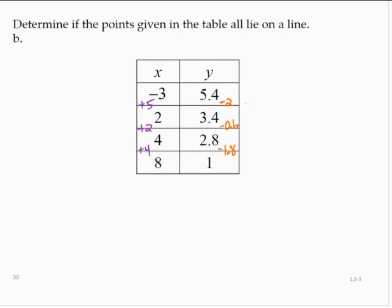Calculating the ratio, we would have negative 2 over 5, which is negative 0.4. Between the second and third ordered pairs, we would have negative 0.6 over 2, which is negative 0.3.